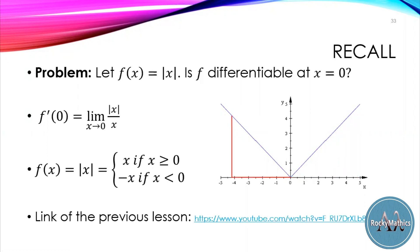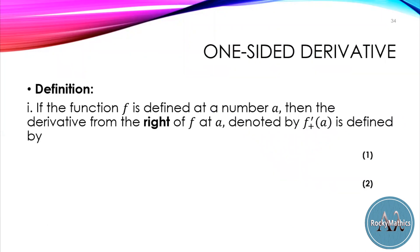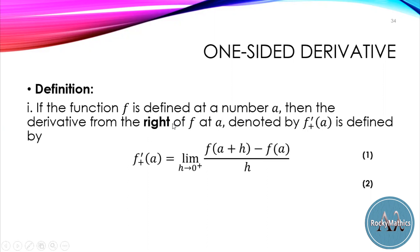This topic is very related to our next topic, which is the one-sided derivative. Let's have first the definition. If the function f is defined at the number a, then the derivative from the right of f at a, denoted by f prime sub-plus of a, is defined by this formula. This formula is very familiar — it is the formula for finding the derivative using the definition.